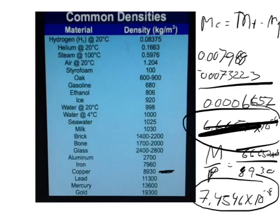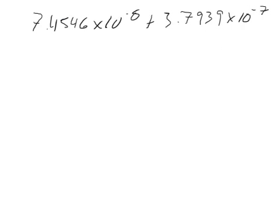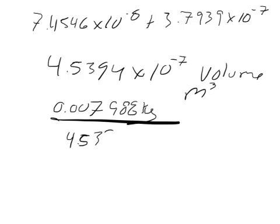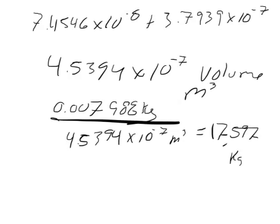So it's the 7.4546 times 10 to the negative 8th plus the 3.7939 times 10 to the negative 7th. So when you add those together, you'll get 4.5394 times 10 to the negative 7th. And so that is the total volume. So that's the volume in cubic meters of the whole coin. And so we've got to take the mass over the volume. So 0.007988 kilograms divided by the 4.5394 times 10 to the negative 7th meters cubed is going to give us a density of 17,597 kilograms per cubic meter.